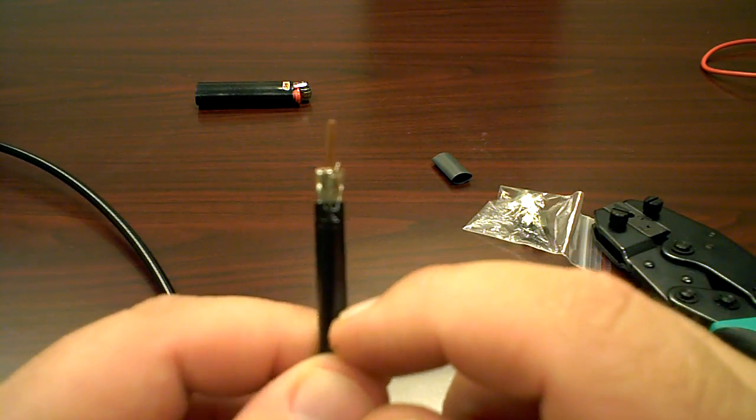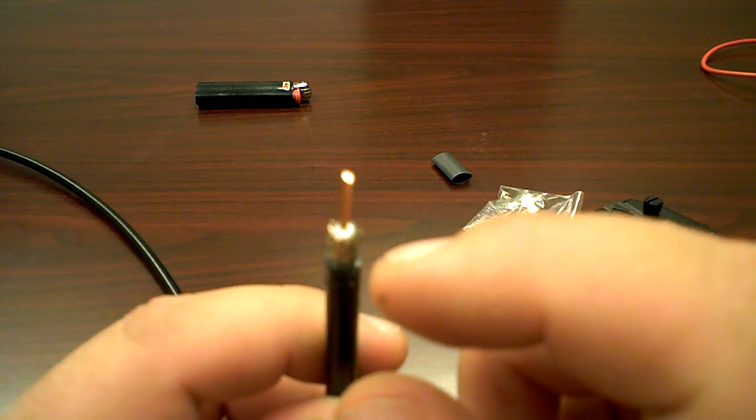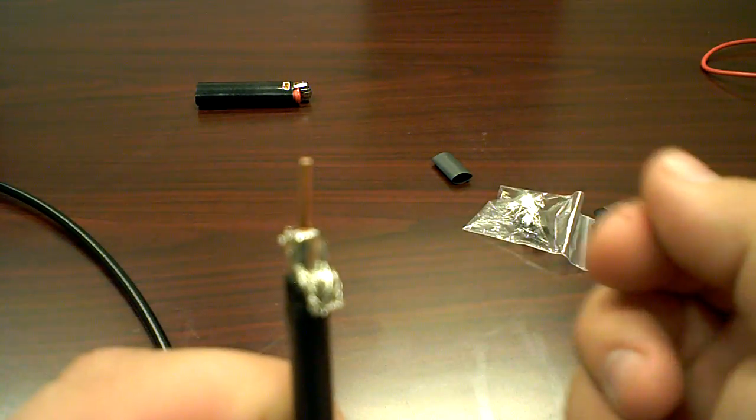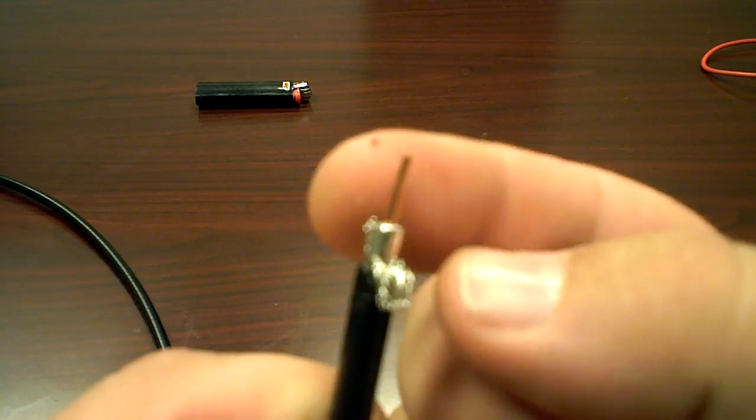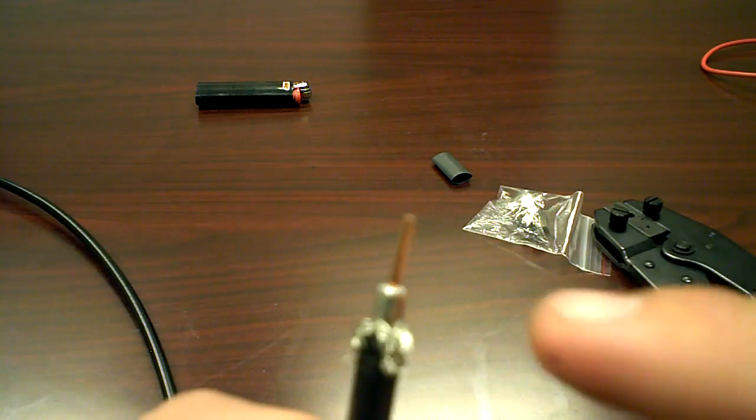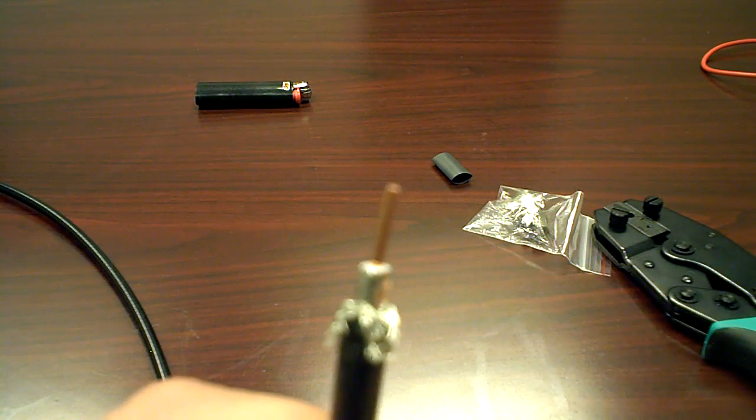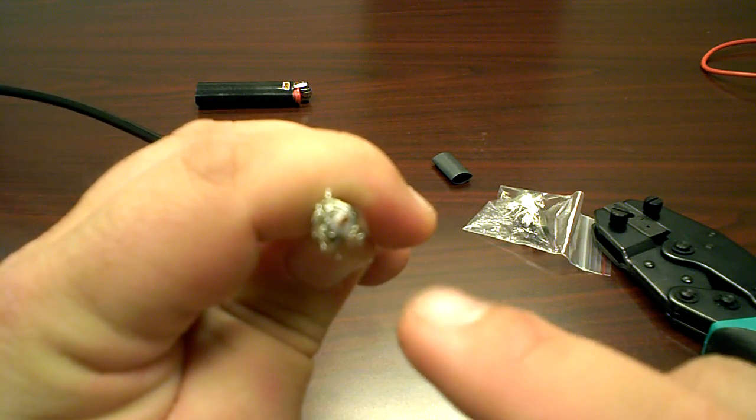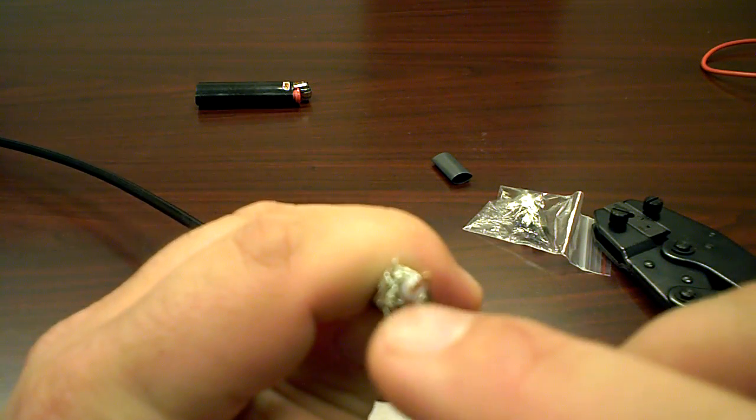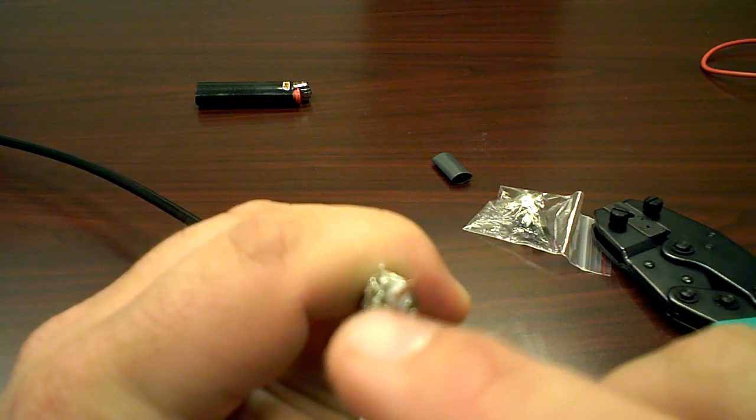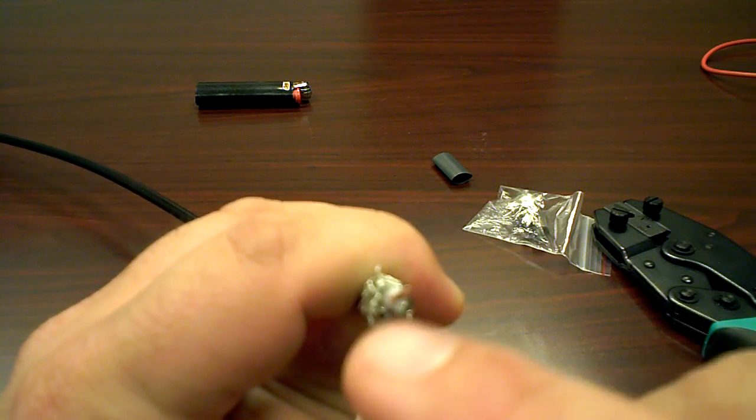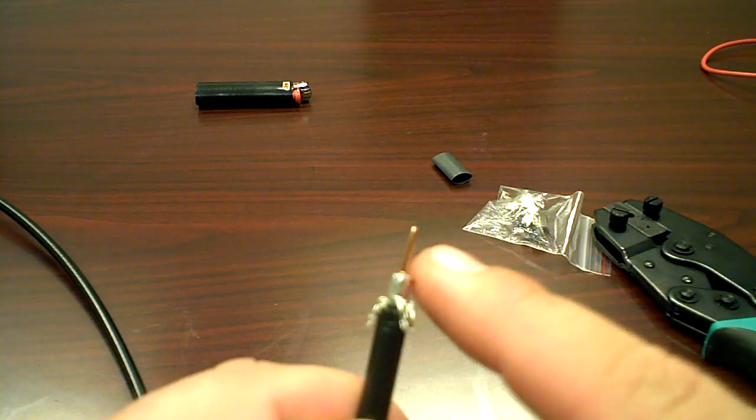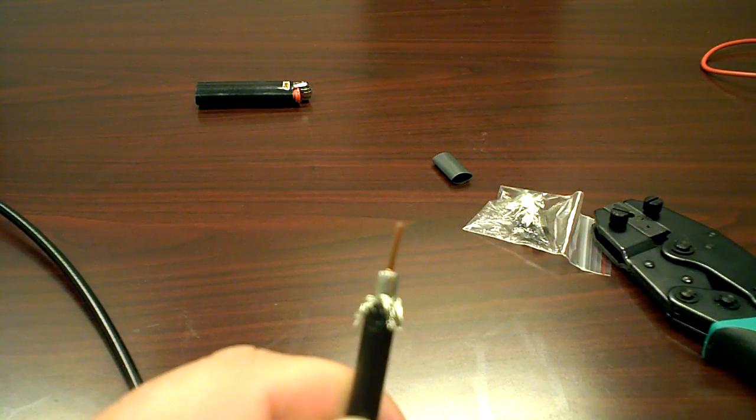Basically you've got your outer jacket, your UV protecting jacket. Next, you have your braid. I'm going to pull that down. Inside your braid is your aluminum foil. And if you can see this, in here there's a white substance that surrounds your copper stinger, which is basically called your dielectric. And then of course the copper center conductor, also known as a stinger.